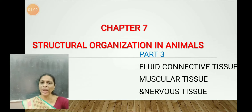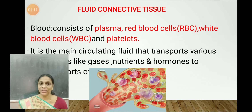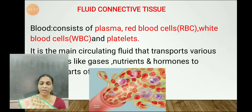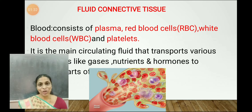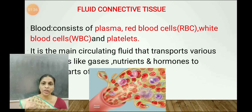You have studied about blood. So what is blood? Blood is the red colored fluid which is in constant circulation in our body. Here in the picture you can see a blood vessel through which the blood comes out. Blood is red in color because of the presence of a red colored pigment called hemoglobin.